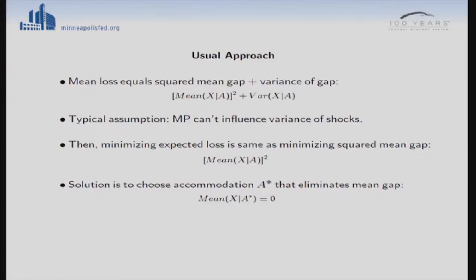The typical assumption in this kind of analysis is that as a monetary policymaker, you can't influence the variance of the shocks impacting you. You make your choice A of accommodation, then shocks hit you and impact the gap, but you can't influence that variance. That assumption means minimizing expected loss is really the same as just minimizing the squared mean gap. The solution becomes simply to choose the level of accommodation that eliminates the gap on average. Ex post, inflation could be higher or lower than 2% if that's your target, but on average it's going to equal zero.